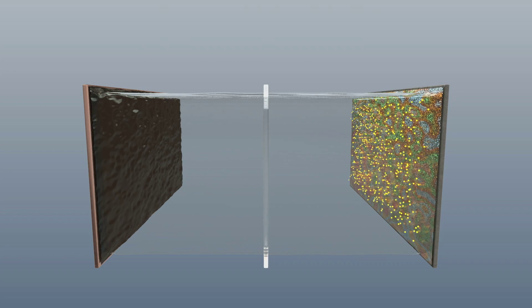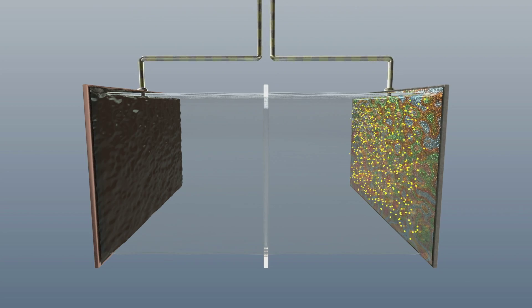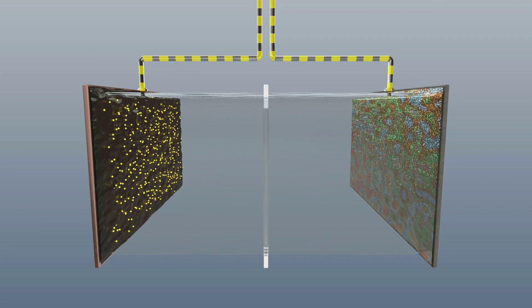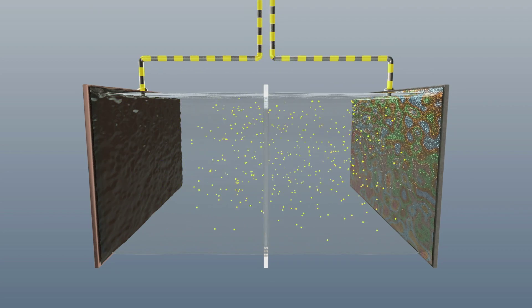No current can flow between the anode and the cathode without lithium ions. And if the current cannot flow, then of course the electric vehicle won't be able to move.